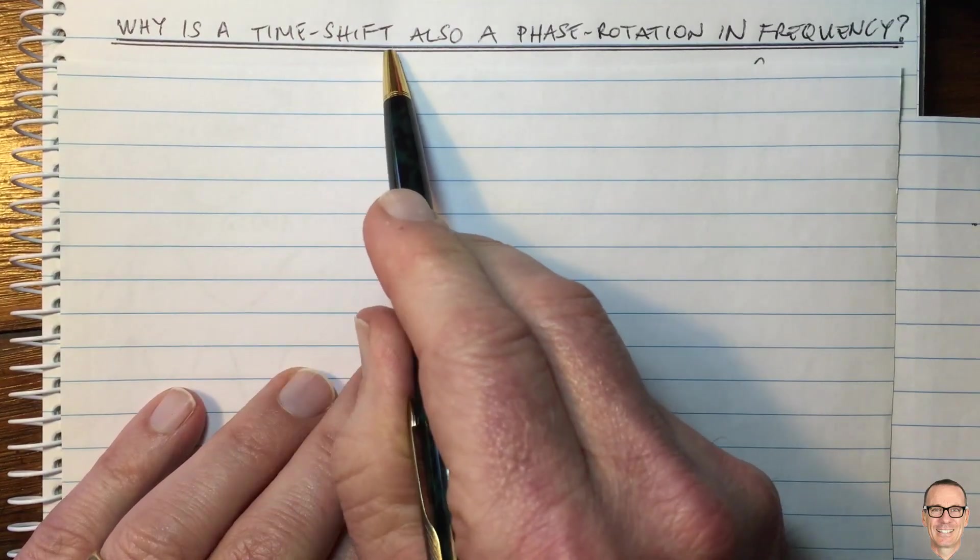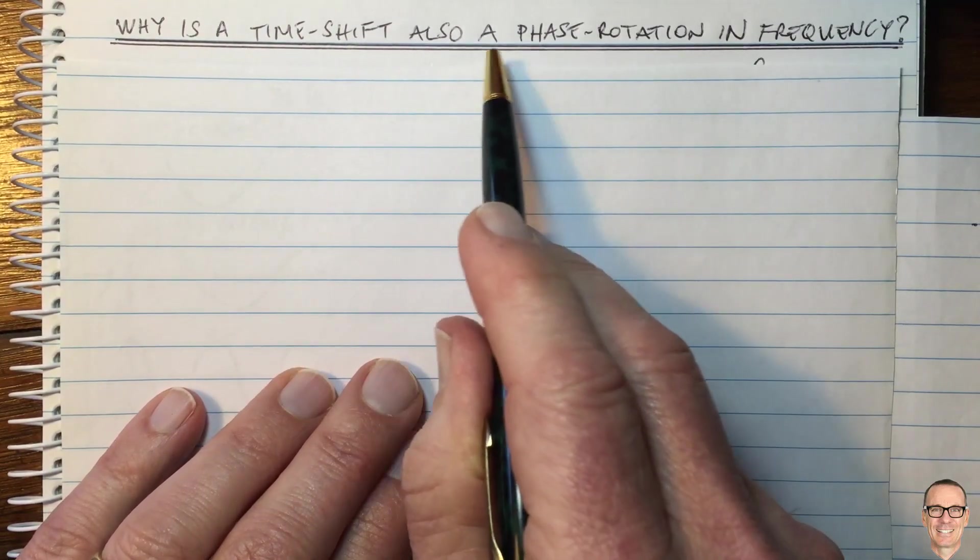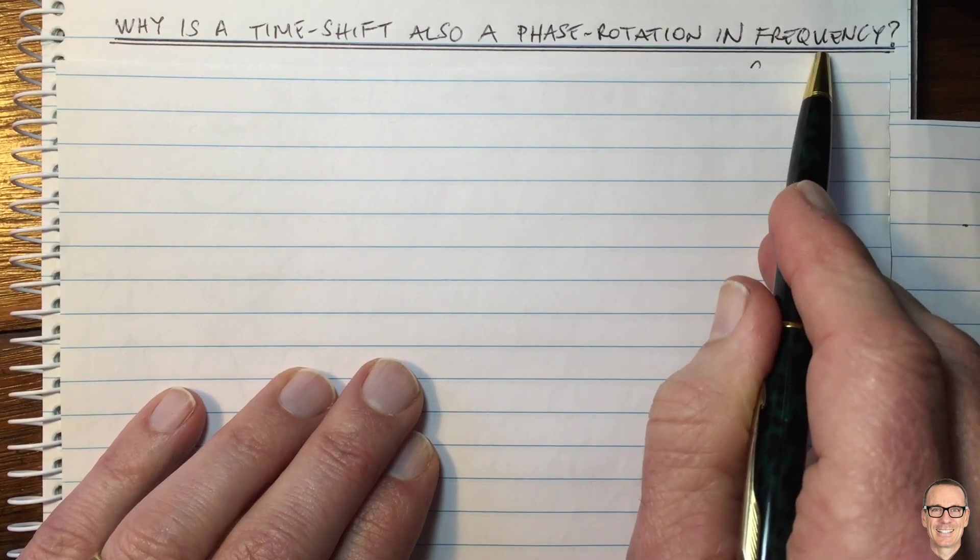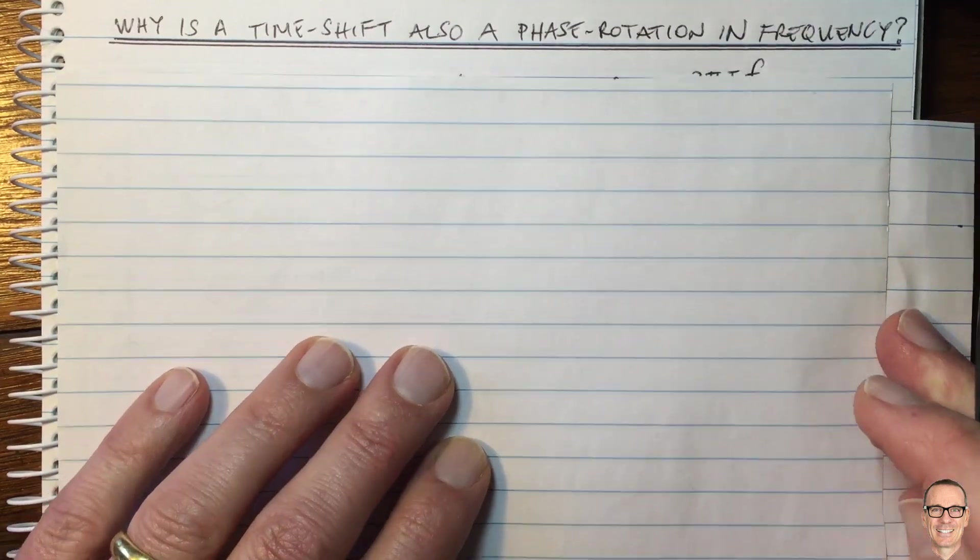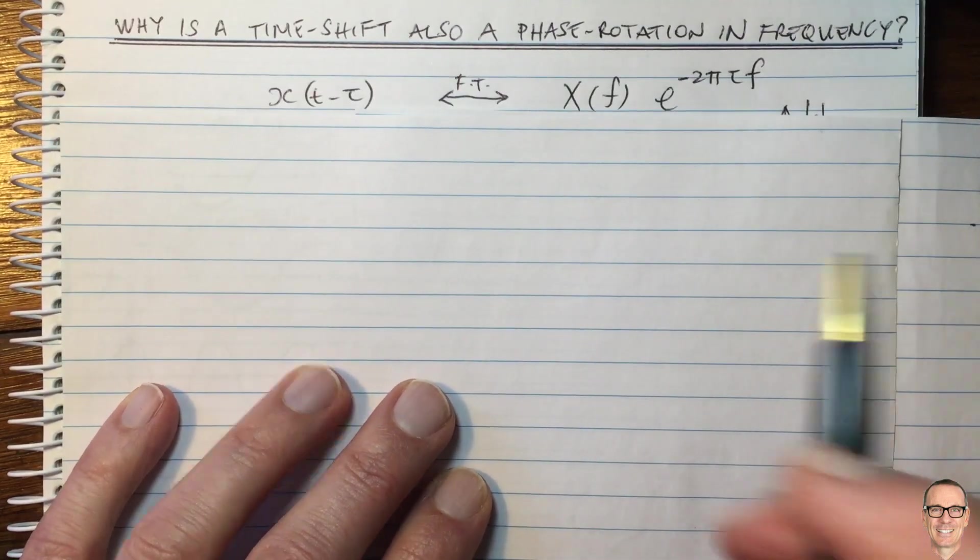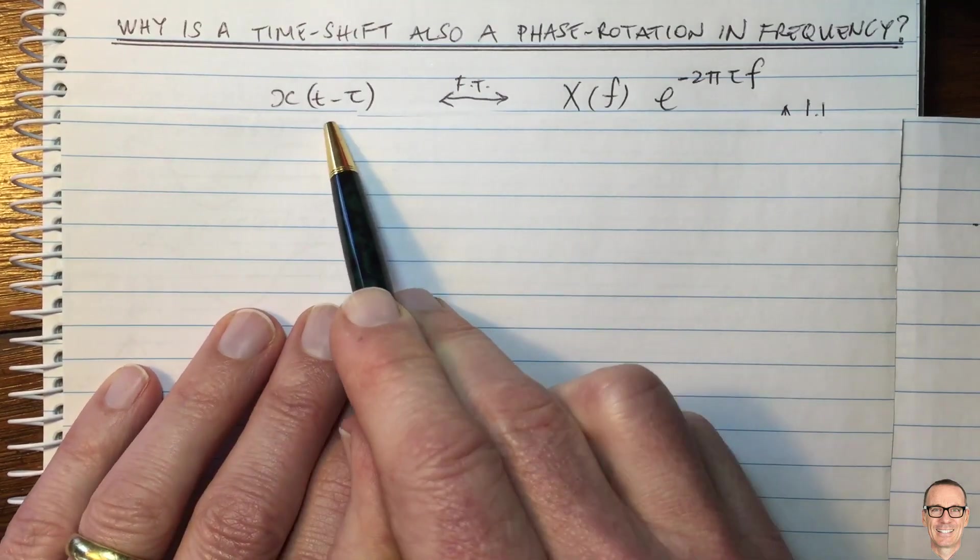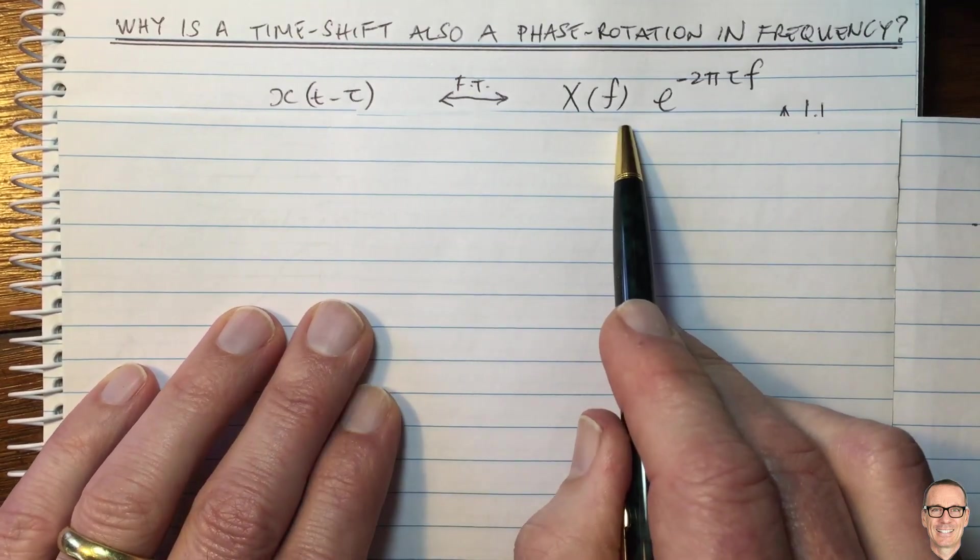Why is a time shift of a signal also a phase rotation in frequency? Well, this is what the Fourier transform tells us it's going to be. So let's try to understand that a bit more intuitively.